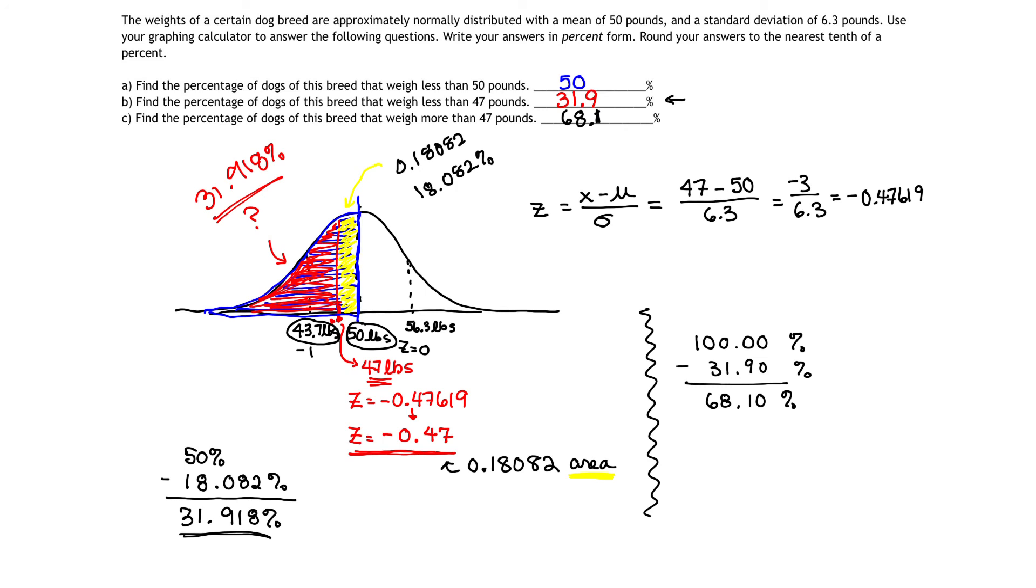Lots of tongue tying there. I hope this makes sense. If you do have any questions, please let me know. And again, you might, if you had chosen, I just want to point out, you could have also chosen negative 0.48 on your Z table score. And it's going to give you slightly different answers. And that's okay. My open math should take both of these. All right, good luck. And do let me know if you have any questions.